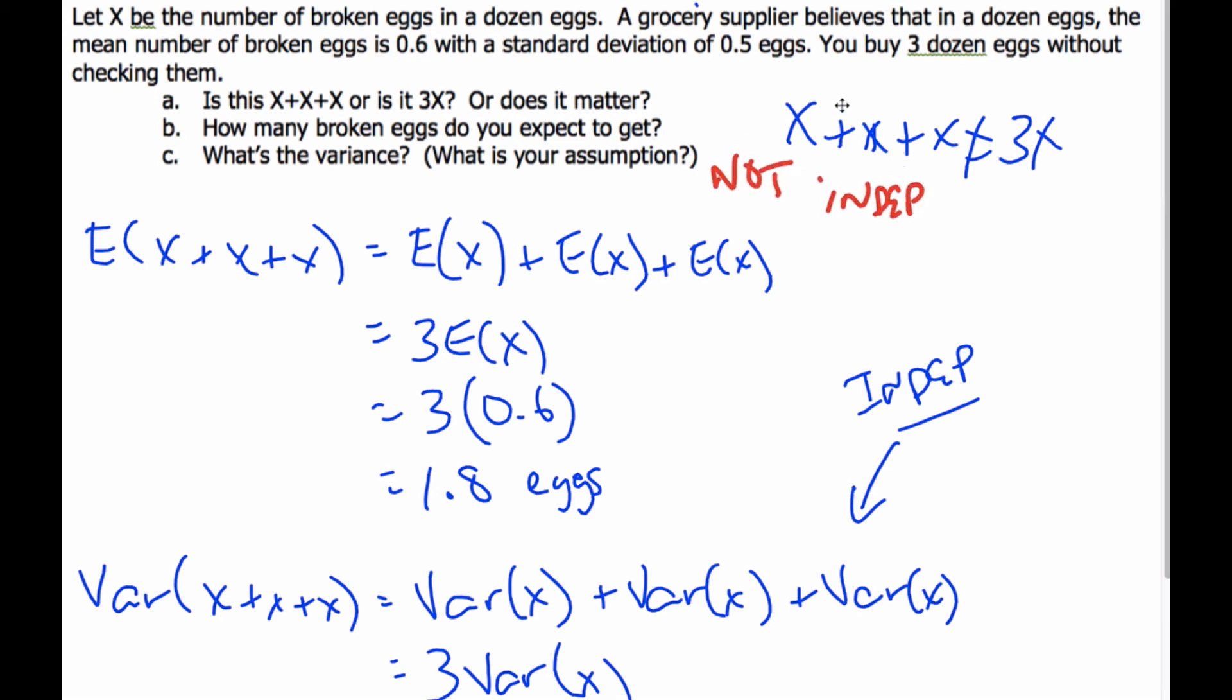Because if you go to a grocery store and you go to buy three dozen without checking them, you're typically going to just grab three that are right there. These are very dependent. Imagine if someone knocked into the thing of eggs, they're all going to be related. The shipping of these three that are together, there's going to be some kind of relationship between them. So I would say they're definitely not independent.